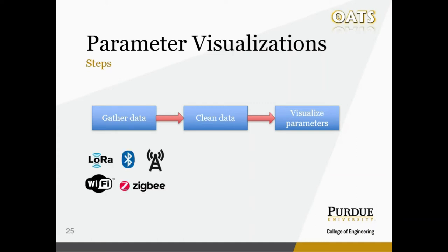In terms of data gathering, I want to find data for these five protocols: LoRa, BLE, Cellular, Wi-Fi, and Zigbee. They all have pretty different characteristics, although BLE and Zigbee have a fairly similar range and data rates. We will see how the data visualizations can help us identify differences within these five different protocols.